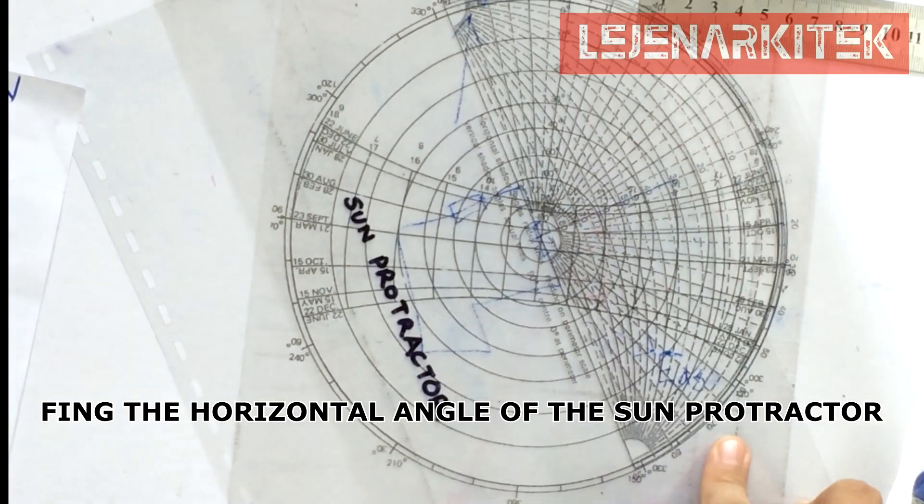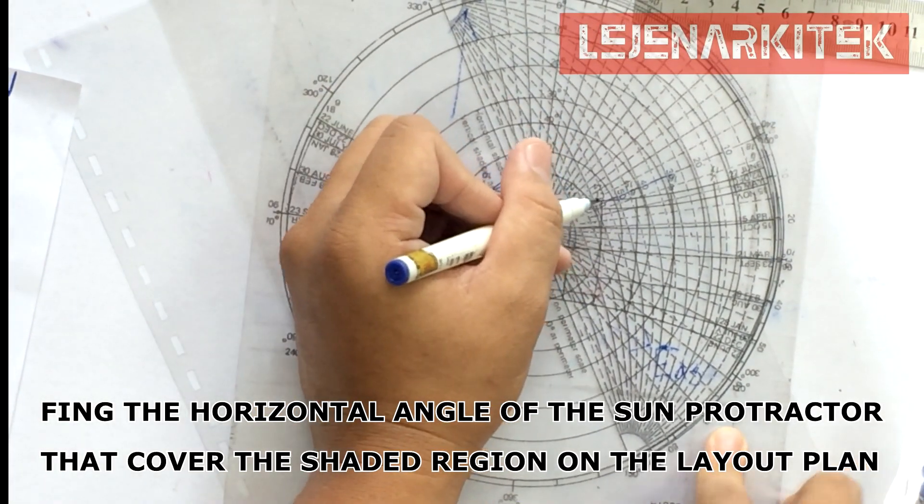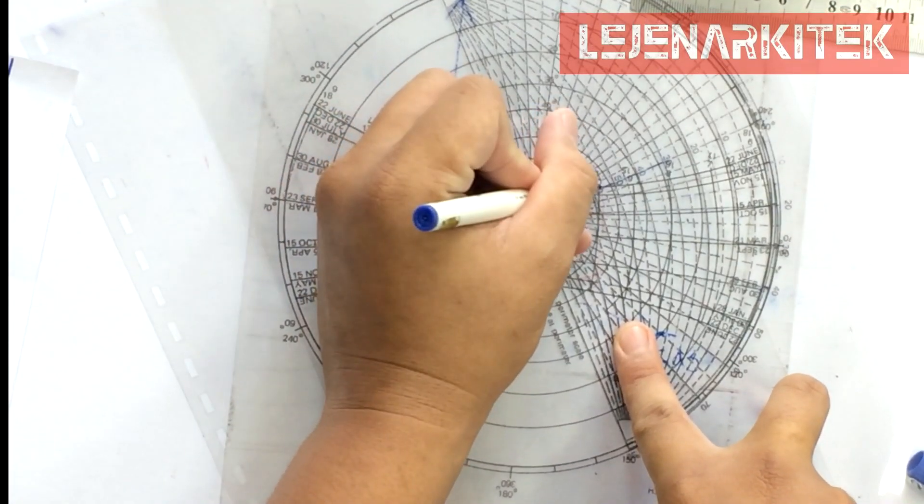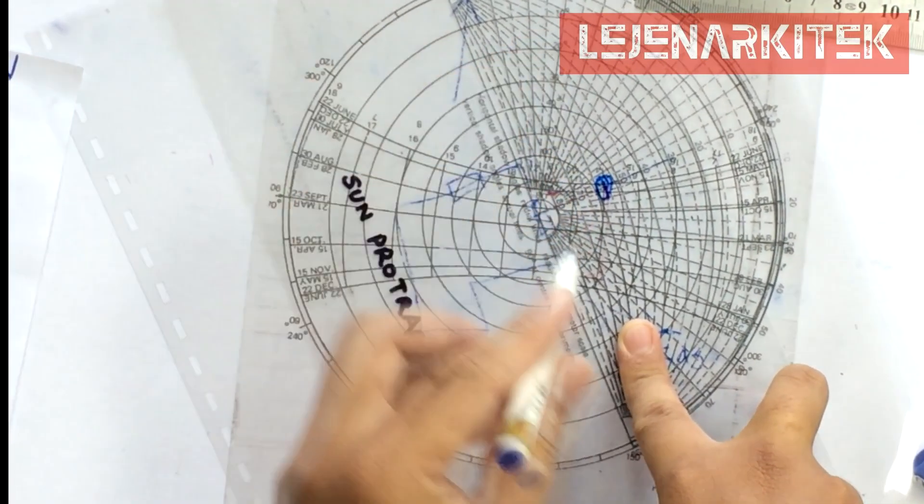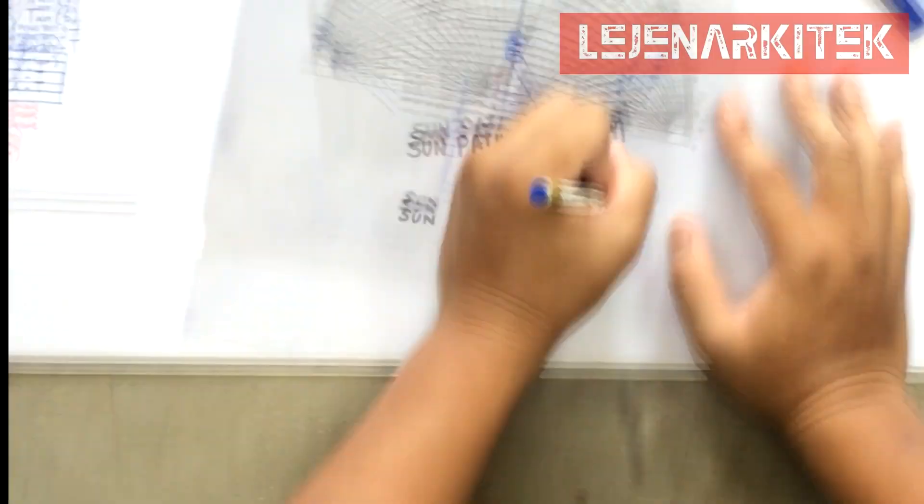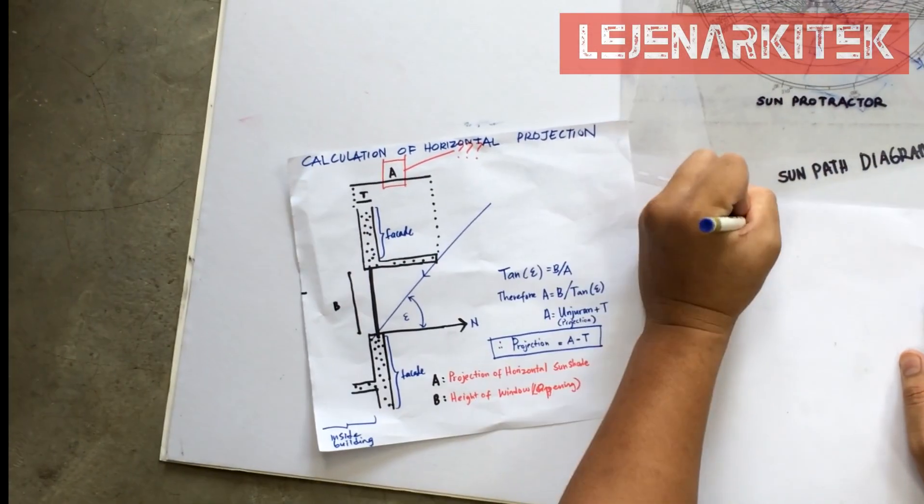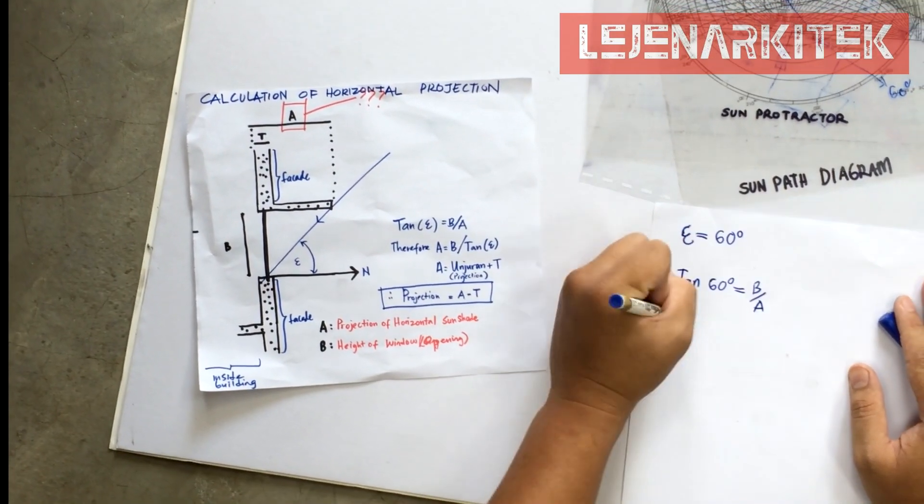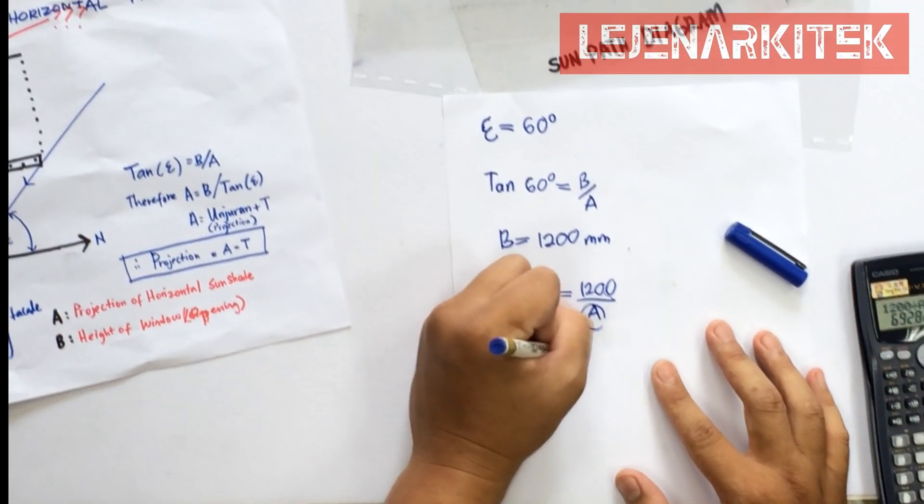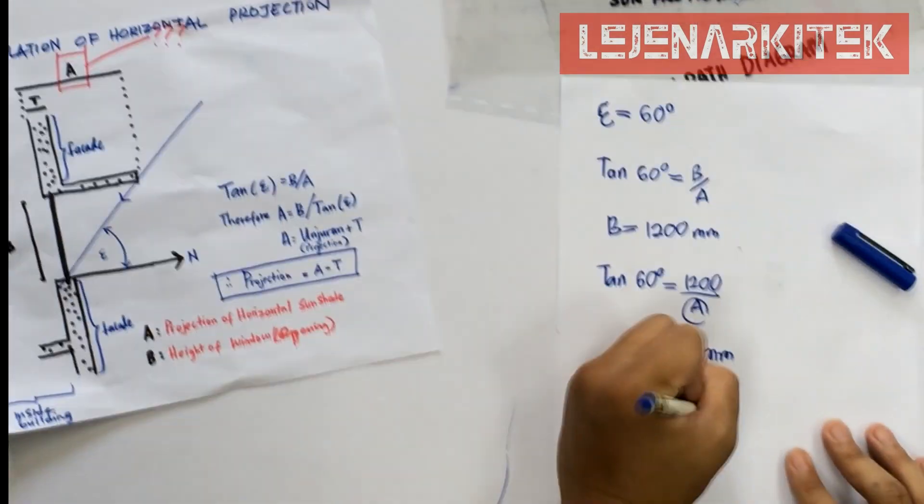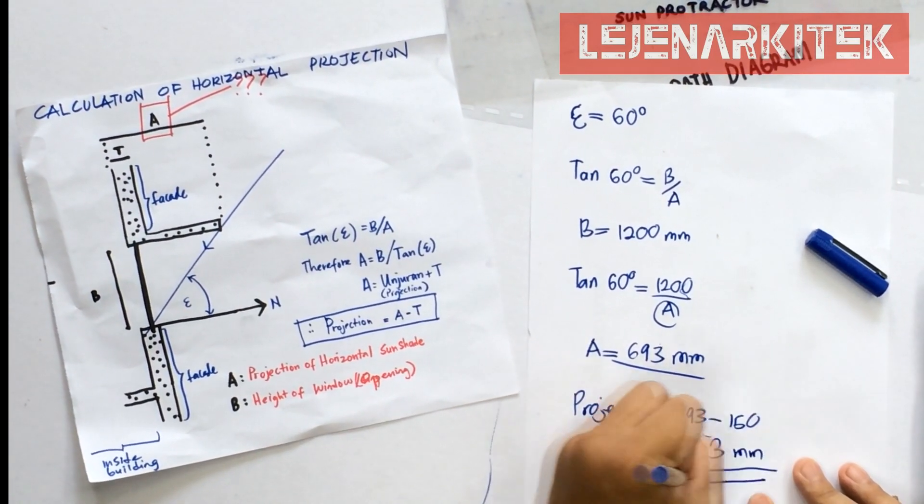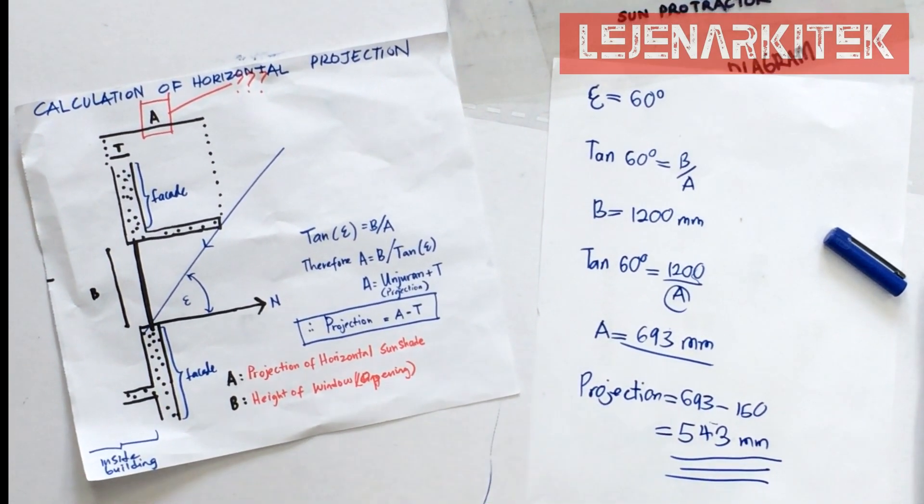Step eight, find the horizontal angle on the sun protractor that covers the shaded region on the layout plan. And therefore, you will find the answer of the projection of horizontal sunshade calculation. As simple as that and we hope you enjoy our video.